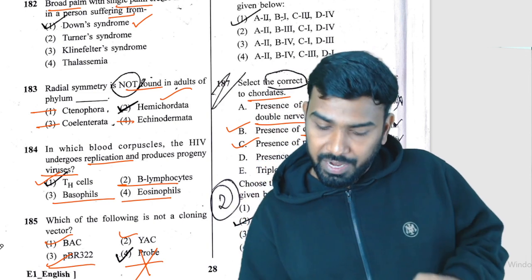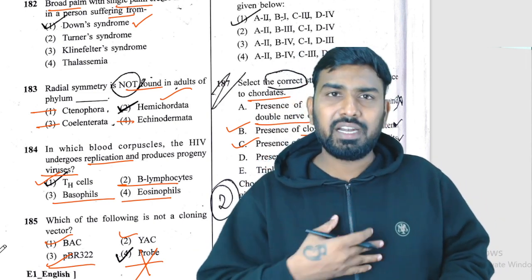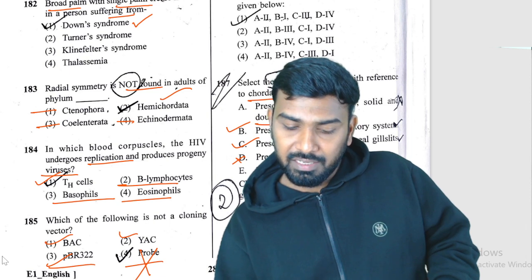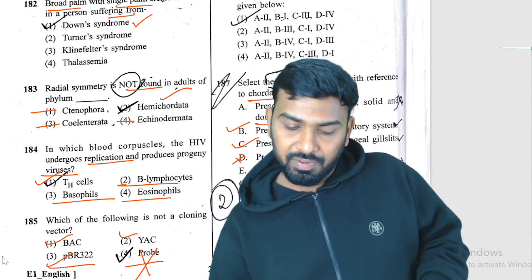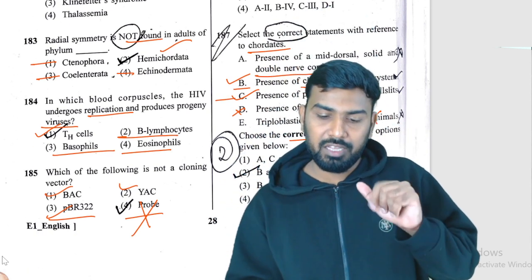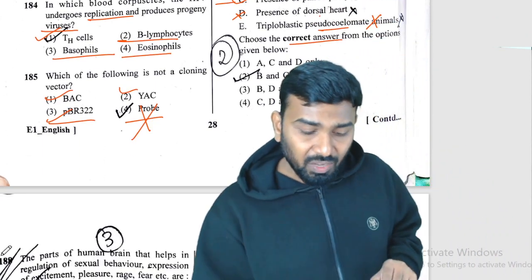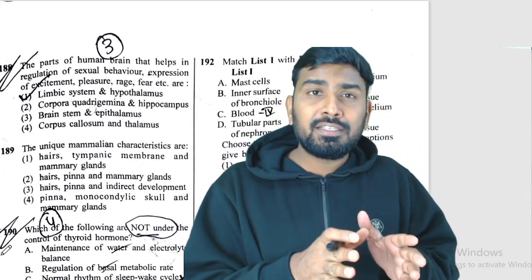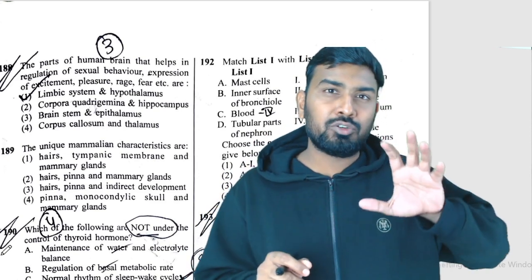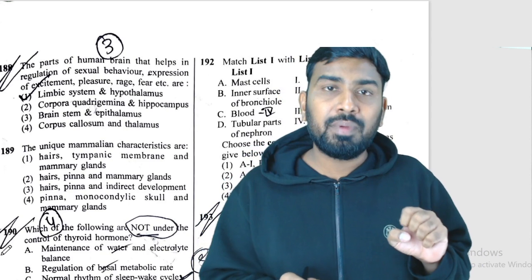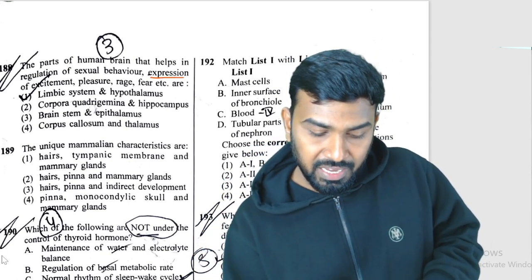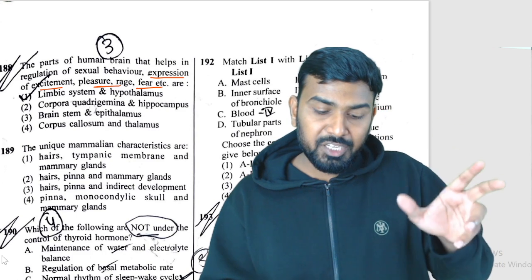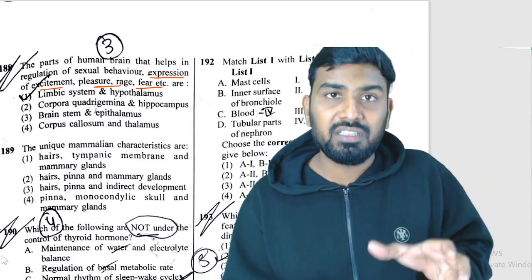Question 188: the limbic system in association with the hypothalamus controls sexual behavior, feelings, expressions, excitement, and pleasure. The question asks which part of the human brain controls sexual behavior, expressions, and pleasure — the answer is the limbic system in association with the hypothalamus.